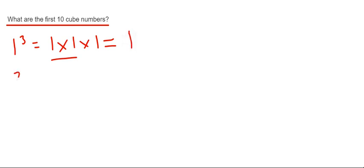So our next cube number will be 2 cubed. So this is 2 times 2 times 2. So again, if you work out 2 times 2, that's 4 times another 2 is 8.